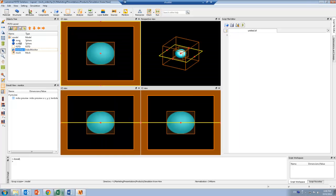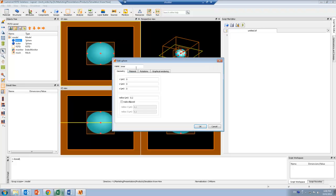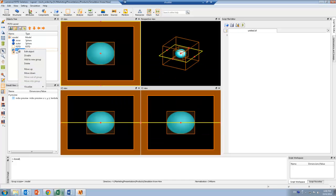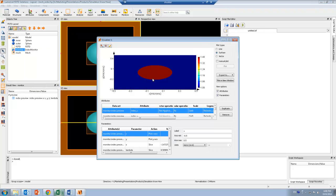And now if I go to the inner sphere and I change the mesh order to 4, which is larger than that of the outer sphere, I can look at my index preview again, and you can see that I don't have a core-shell structure anymore.